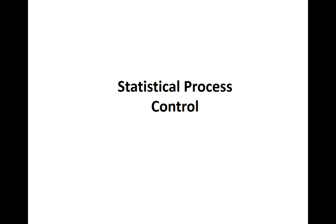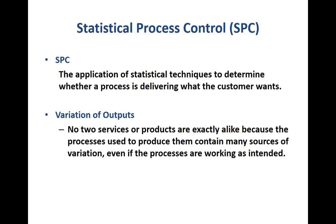Hello and welcome. In this presentation I'll be talking about statistical process control. We look at what exactly statistical process control is and what are some key elements in constructing it. Statistical process control, or SPC in short, is an application of statistical techniques to determine whether the process is delivering products as per the customer specification — in other words, are we creating products or services that can satisfy the customer.